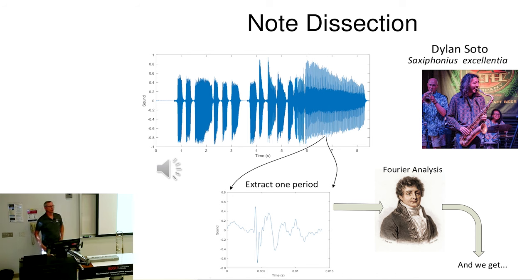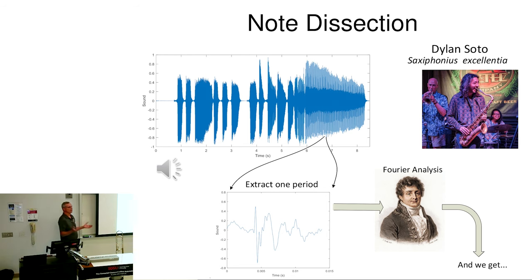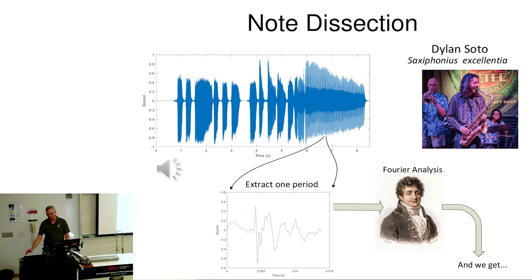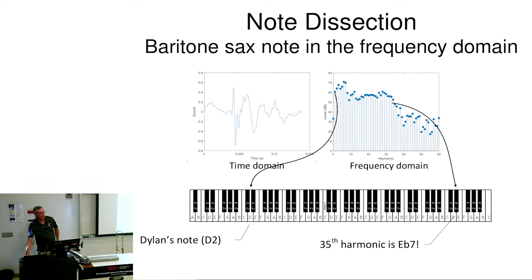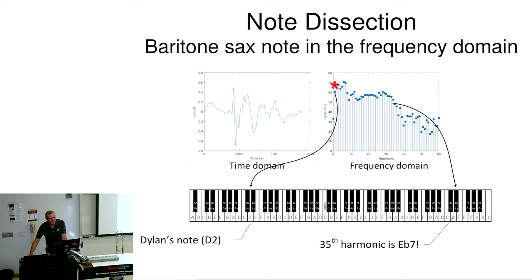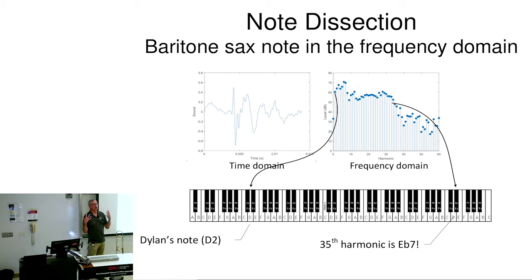Now I'm going to do what is called Fourier analysis. Fourier was a really smart guy who lived a long time ago, and he gave us the ability to go between the time domain and the frequency domain. Let's look at Dylan's sound in the frequency domain. Here's his sound in the time domain, and these are the harmonics of Dylan's signal. That low D2 that he played — here is his fundamental at 73 hertz. This is 146 hertz, and this is 73 hertz more.